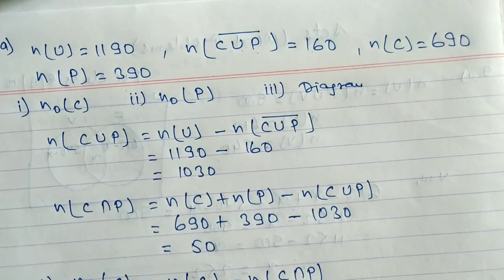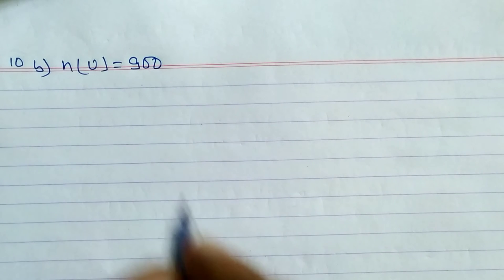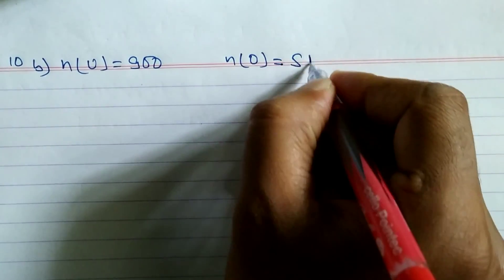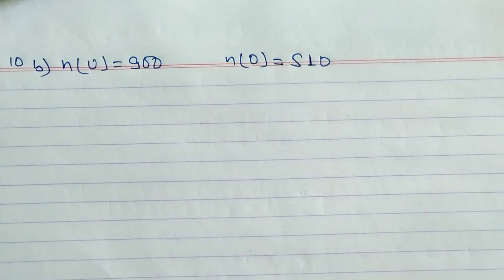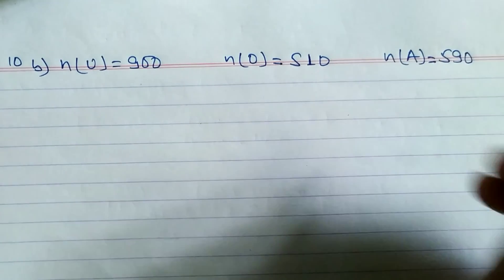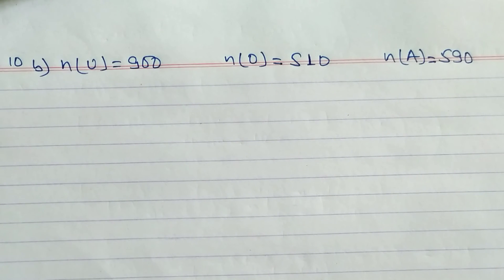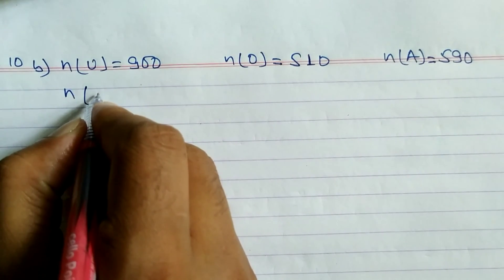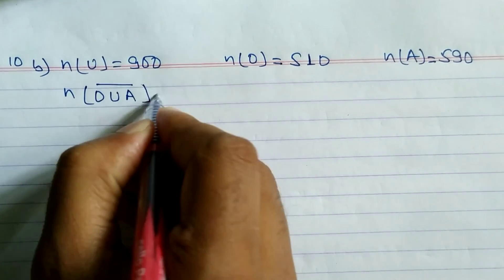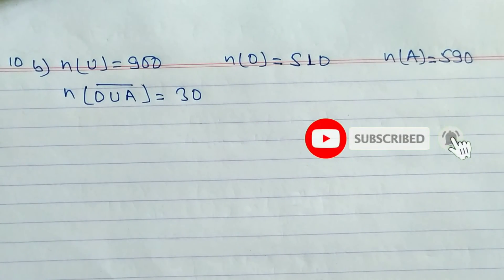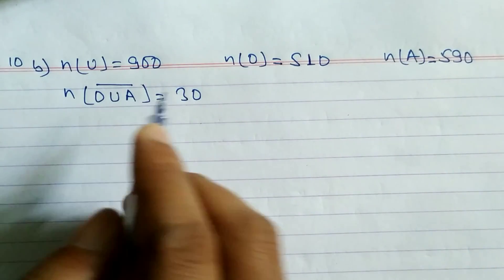Now look at question number 10B. In a survey of 900 people, N(U) equals 900. 510 people like to drink orange juice, so N(O) equals 510. 590 like to drink apple juice, so N(A) equals 590. And there are 30 people who do not like both fruits — meaning they like neither orange nor apple — so N(O union A complement) equals 30.